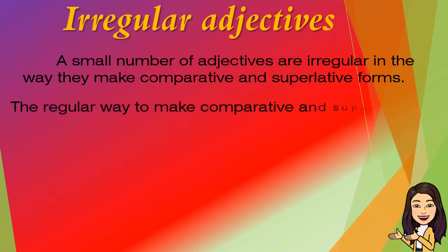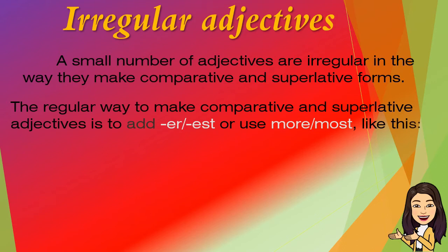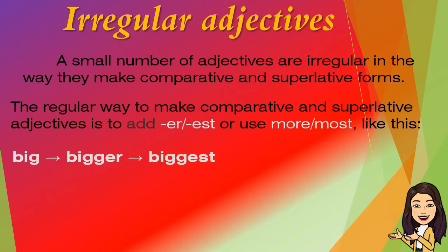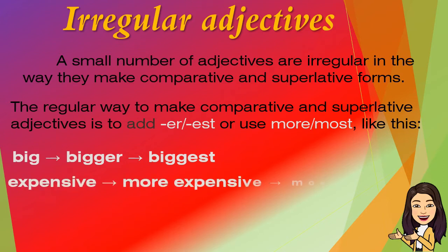The regular way to make comparative and superlative adjectives is to add -ER or -EST, or use more or most — like this: big, bigger, biggest; expensive, more expensive, most expensive.